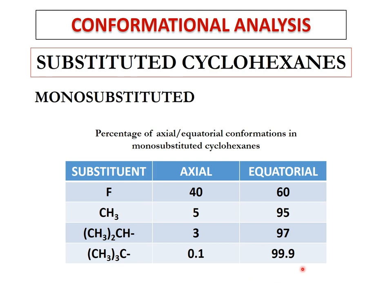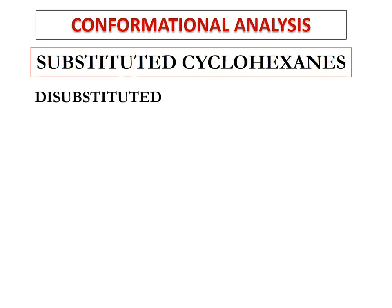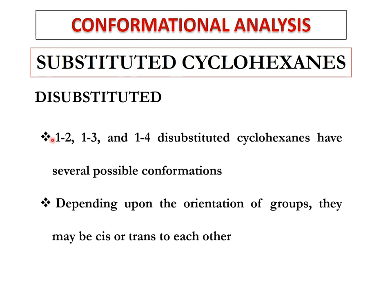A bulkier group will preferably be equatorially oriented rather than axially oriented. Rings could also be disubstituted or multi-substituted. Disubstitution means two substituents attached, which could be at 1,2 or 1,3 or 1,4 positions relative to each other. These disubstituted cyclohexanes have several possible conformations, and depending on the orientation of these groups they could be cis or trans — cis meaning both substituents projected on the same side, trans meaning they are on opposite sides.